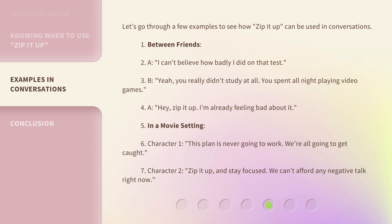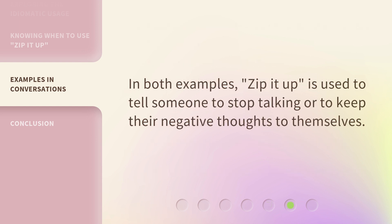In a movie setting — Character 1: "This plan is never going to work. We're all going to get caught." Character 2: "Zip it up and stay focused. We can't afford any negative talk right now." In both examples, "zip it up" is used to tell someone to stop talking or to keep their negative thoughts to themselves.